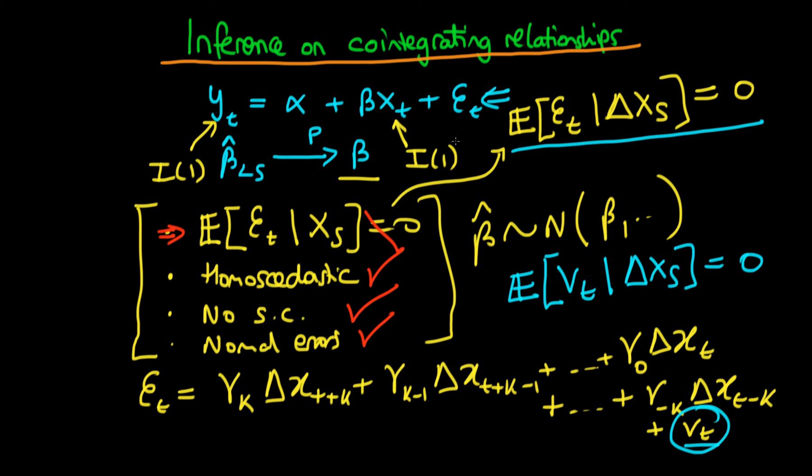And this all comes together in the leads and lags estimator. So the idea here is that we regress yt on alpha plus beta x t, and then we explicitly include all of these leads and lags. And you say, well how many leads and lags do I need to include? Well it kind of depends on a number of things.